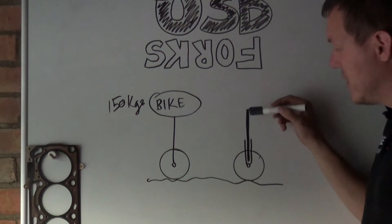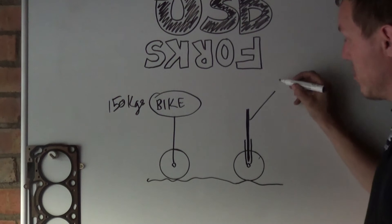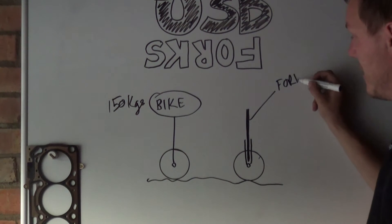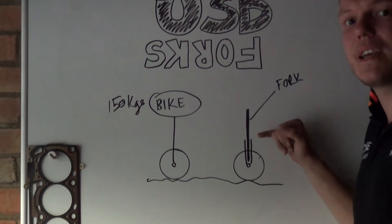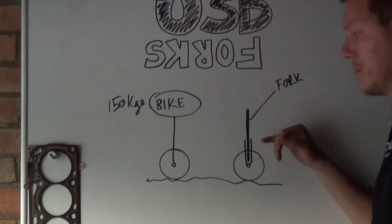Out of these two tubes, the stanchion, which is the actual fork itself, the shiny chrome fork tube, is heavier. It's a steel tube that's been chromed, it's quite robust.